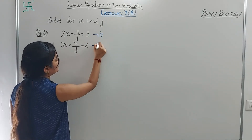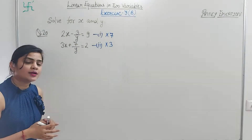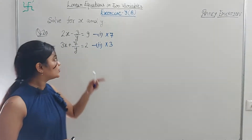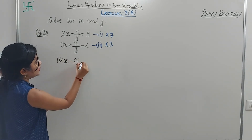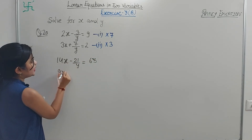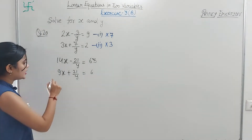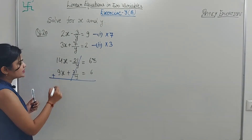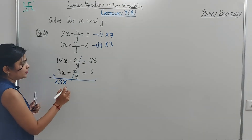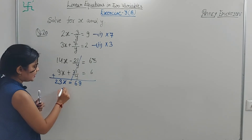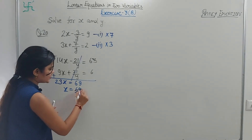Equation 1 has 3/y, equation 2 has 7/y. LCM of 3 and 7 is 21. Multiply equation 1 by 7: 14x - 21/y = 63. Multiply equation 2 by 3: 9x + 21/y = 6. Different signs, so add — 21/y terms cancel. 14 + 9 = 23x. 63 + 6 = 69. So x = 69/23 = 3.